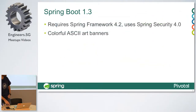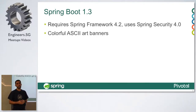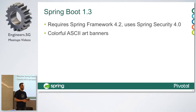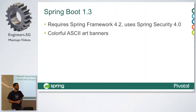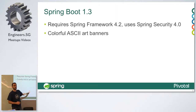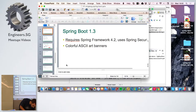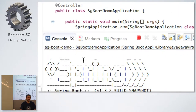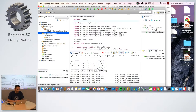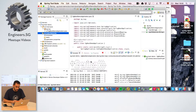Looking at the new features of Spring Boot 1.3, which is the current release: Spring Boot 1.3 is based on Spring Framework 4.2, so that's the requirement. If you're using Spring 3, you won't be able to use Spring Boot 1.3. It also uses Spring Security 4. And, imagine or not, the most talked-about feature in Spring Boot 1.3 has been the colorful ASCII banners.